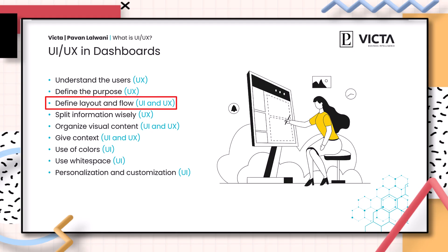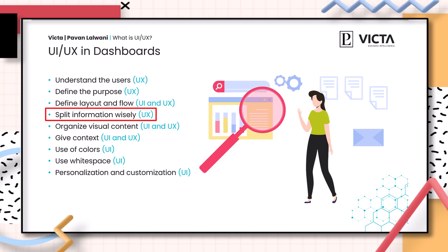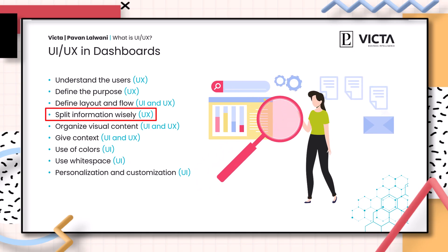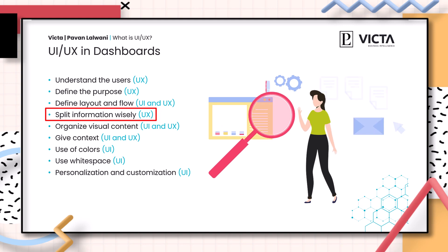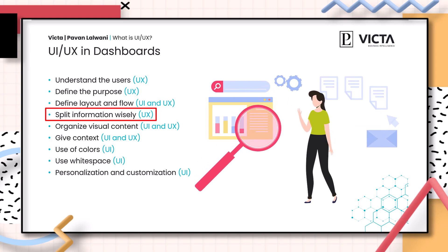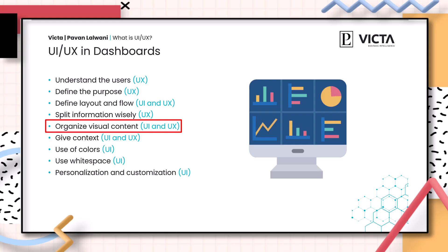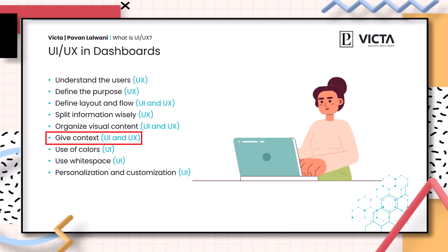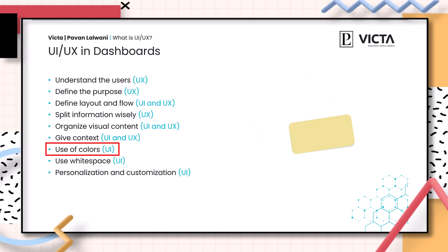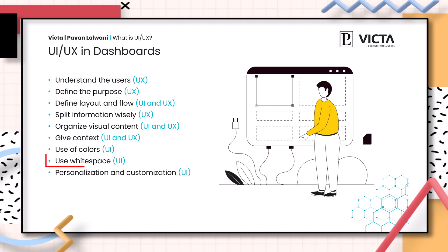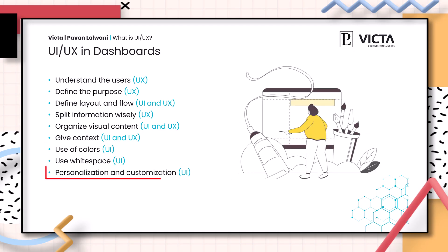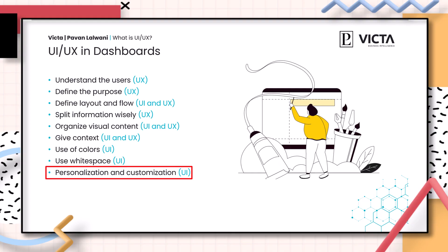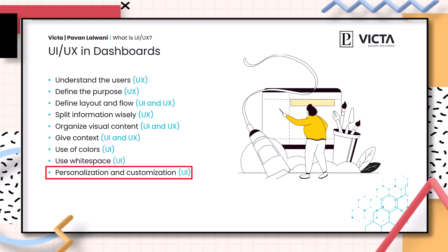Defining layout and flow is both UI and UX. Splitting information wisely is UX — think about not putting all visuals on one page, but splitting them up across different pages. Organizing visual content is both UI and UX. Giving context is both UI and UX, and we will get into that a little bit later on. Use of colors is UI. Using white space around elements is UI. And personalization and customization is also UI. We will dive into these later on.